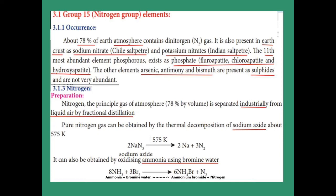We are going to see the preparation of nitrogen. Industrially, large amounts of nitrogen are obtained from liquid air. Liquid air is a mixture of gases in liquid form. From liquid air, we separate the mixture of gases with the help of fractional distillation. Fractional distillation means the boiling points are very close to each other, so we separate each gas fraction by fraction by heating and condensing.